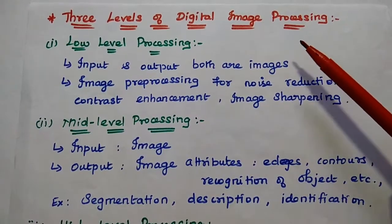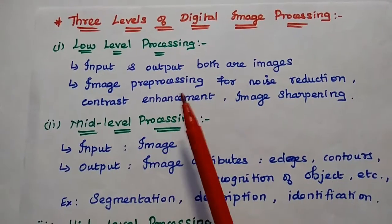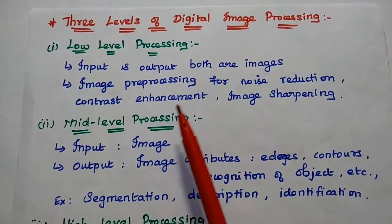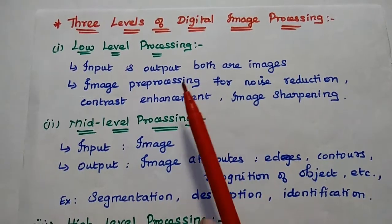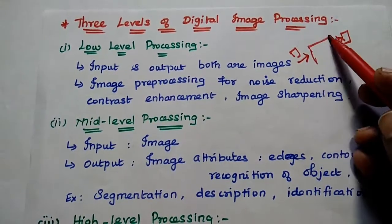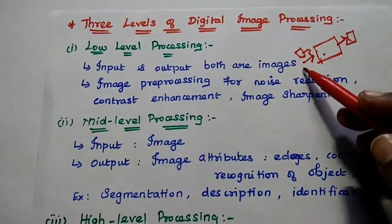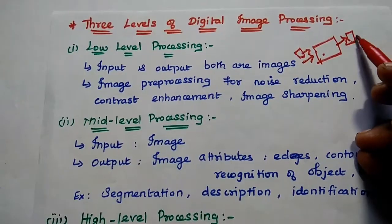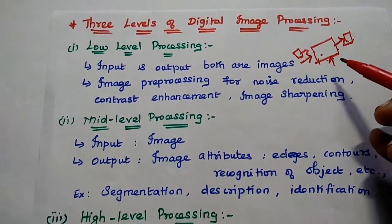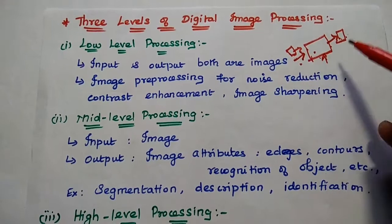There are three levels of digital image processing techniques: low level processing methods, mid level processing methods, and high level processing methods. In low level processing, we perform primitive functions like image preprocessing techniques for noise reduction, contrast enhancement, and image sharpening. Here we give the input as an image and get the output as an image — for example, we give an image with noise and at the output side we get the image without noise, using preprocessing methods like blurring for noise reduction.